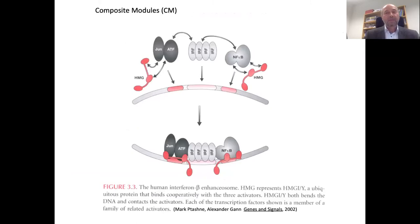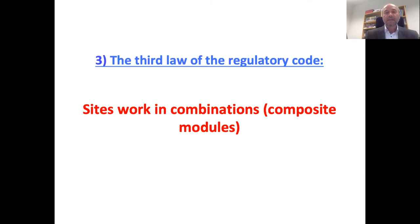Such cooperative binding can be even more complex — for instance in the case of interferon beta, we talk about four transcription factors that all have to be activated together and bind to their cognate place, which we call a composite module. So the third law of the regulatory code is that sites work in combinations — we call them composite modules.